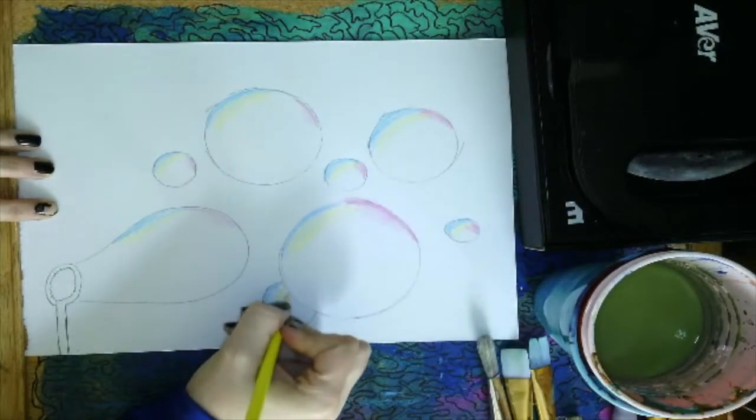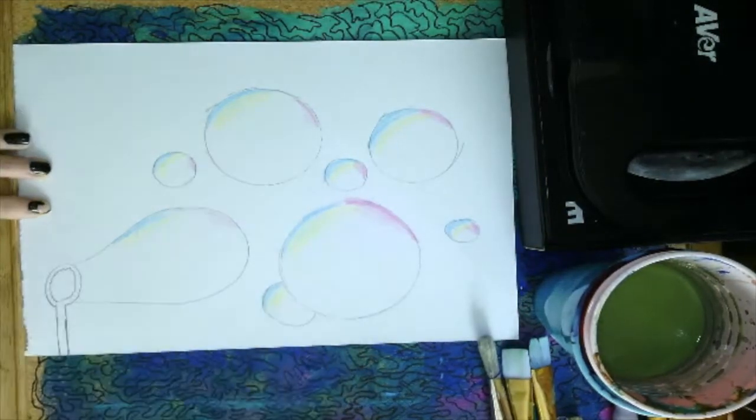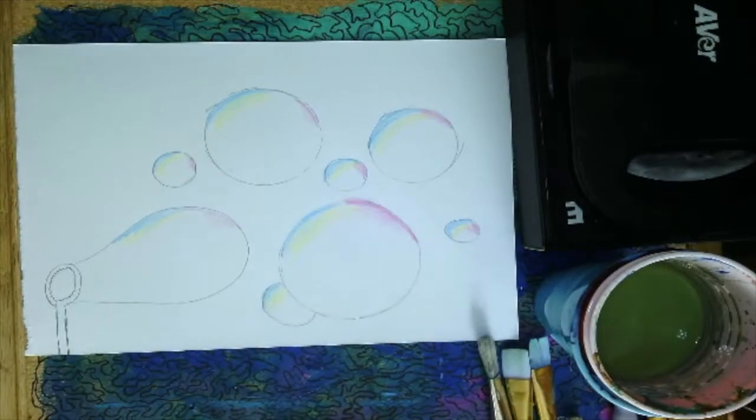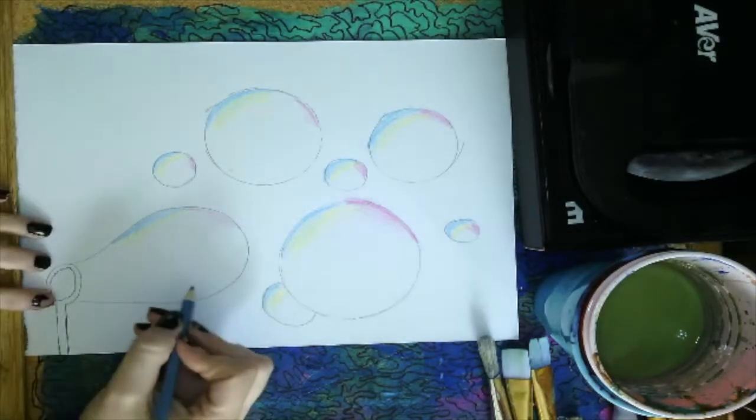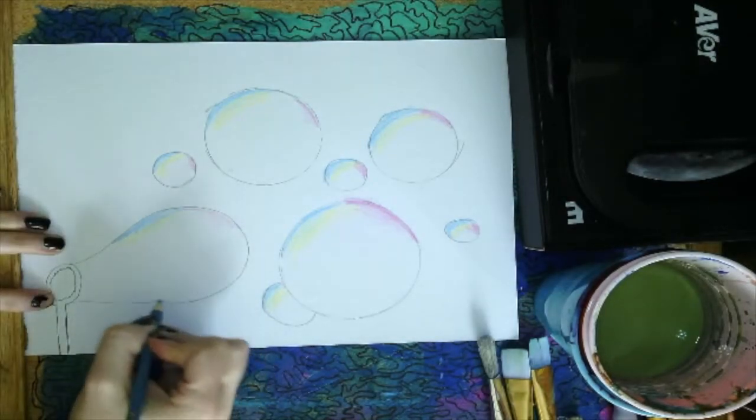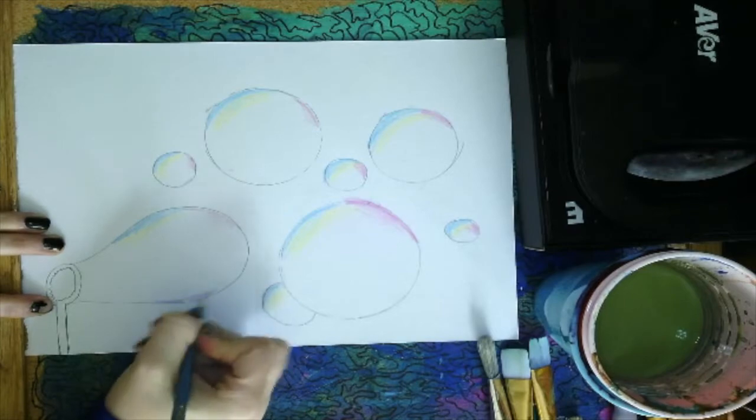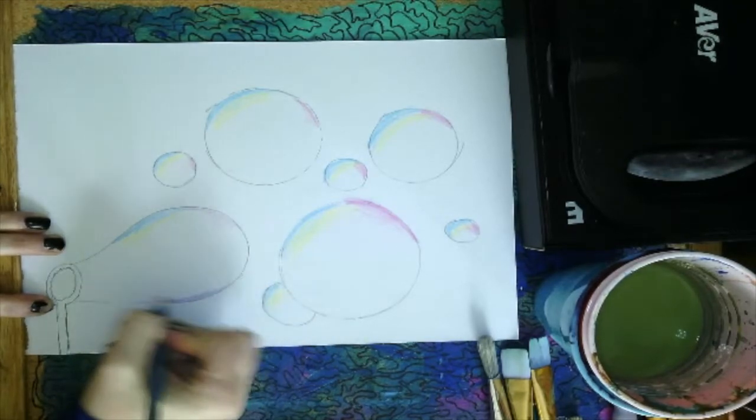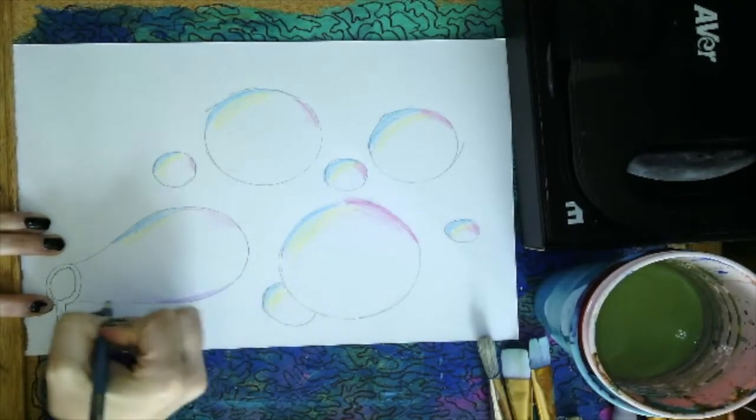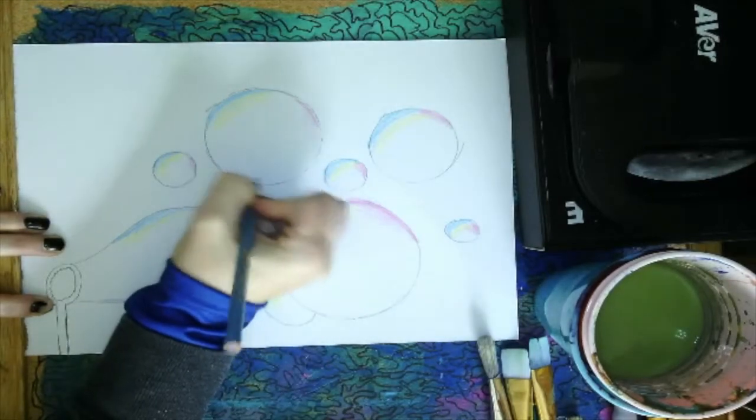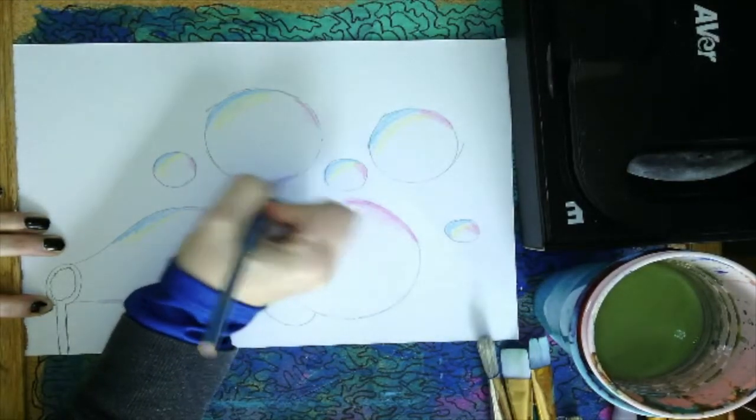Bubbles do tend to have highlights in them though. And highlights are where the sun is reflecting or the light is reflecting. So I do need to make sure that I leave some spots blank white, because that is where the highlight would be. I'm going to add a little bit of luscious lavender, or purple, to my bottoms.